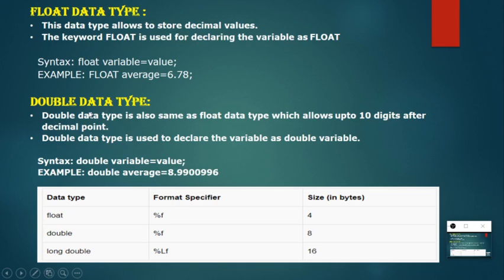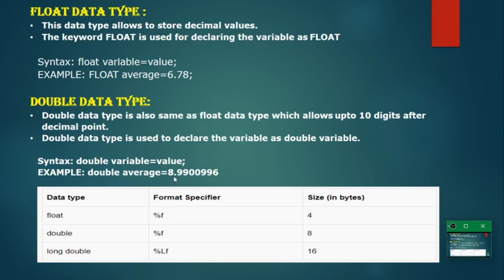Double data type is similar to float, but the difference is that double data type can allow up to 10 digits. It uses the keyword double. The syntax is: double space variable = value. For example, double average = 8.9900. There are three types: float, double, and long double.